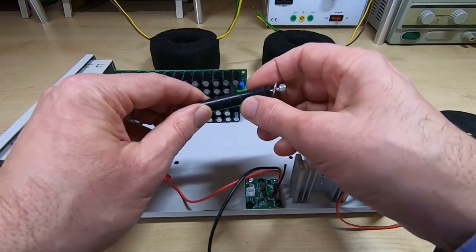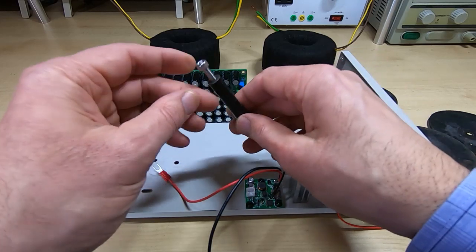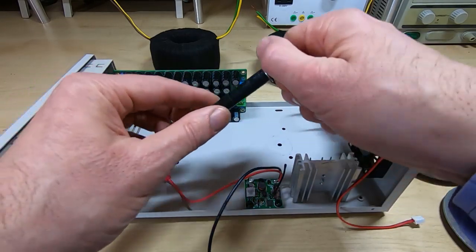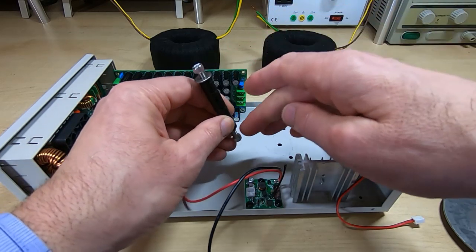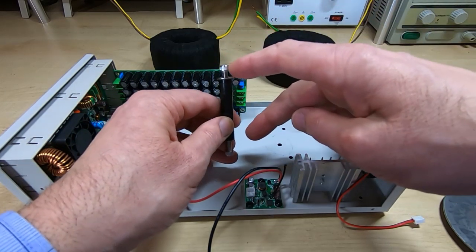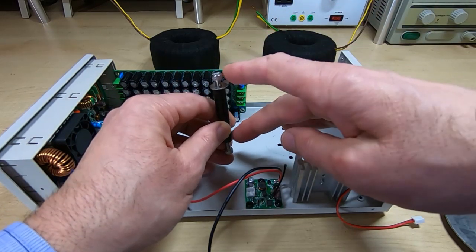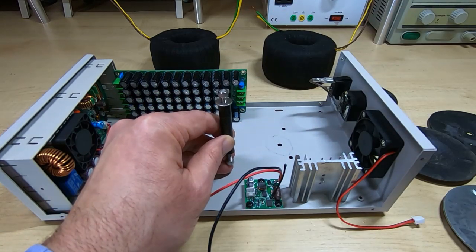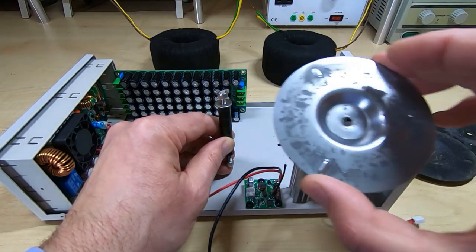To avoid the risk of that, what I tend to do is machine standoffs like this from Delrin rod. I tap them to M5 at each end. That means that although there's a bolt at the top and the bottom, they're not electrically connected so there's no chance of getting a shorted turn.